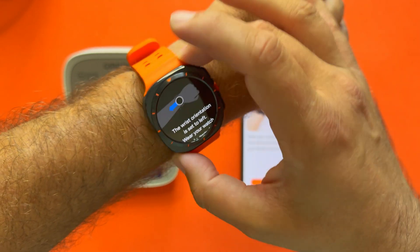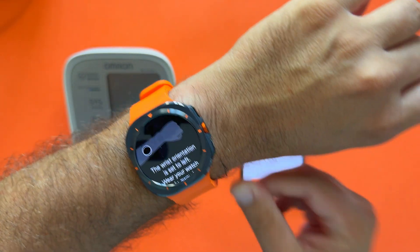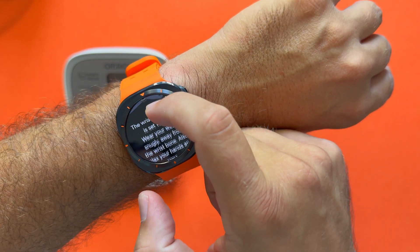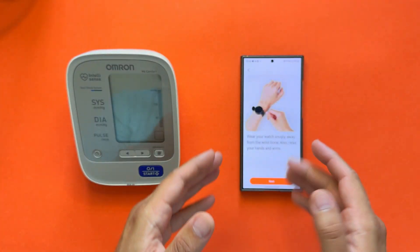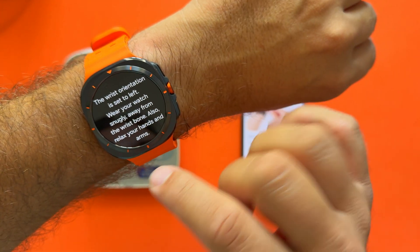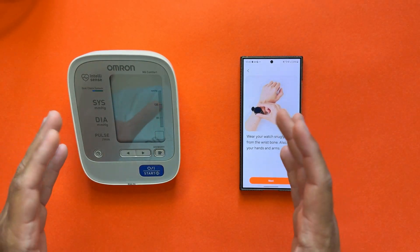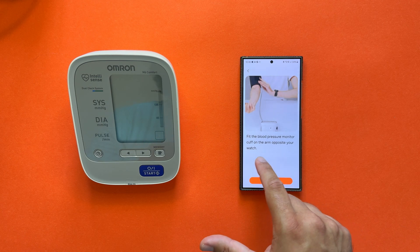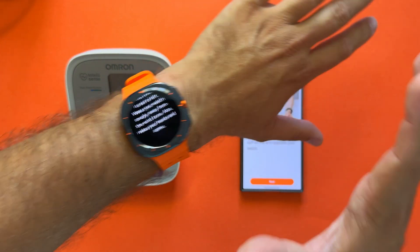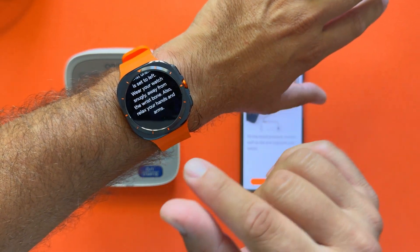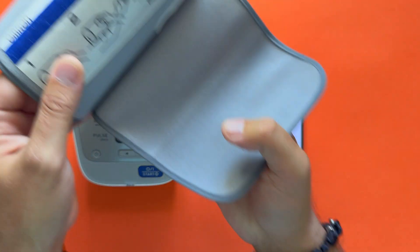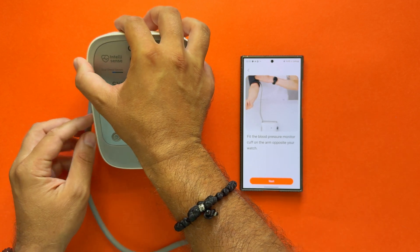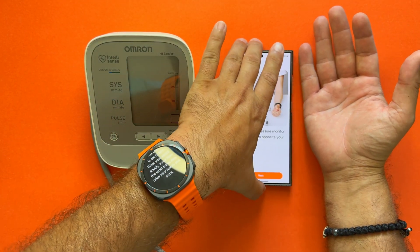I'm going to press Get Started. Wear your watch snugly away from the wrist bone. As you can see, I have it there, it's away from my wrist bone, it's very snug. The wrist orientation is set to left, wear your watch snugly away from the wrist bone. Relax your hands and arms. Now again, I need to warn you, I'm not in the best comfortable position here on my review table. Fit the blood pressure monitor cuff on the arm opposite from your watch. This is very important—I'm wearing the Galaxy Watch Ultra on my left hand, which means I need to attach the cuff on my right hand. Let me attach it. All right, the cuff has been attached.